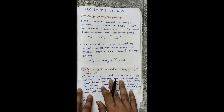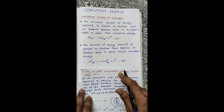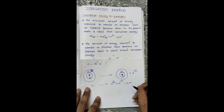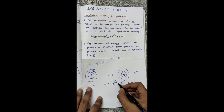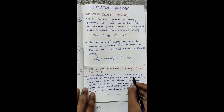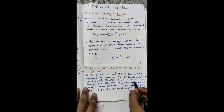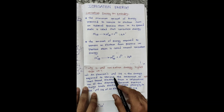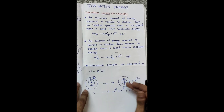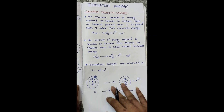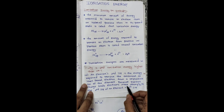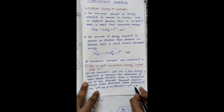Why is the second ionization energy higher than the first? For the first ionization energy there is no charge, but for the second ionization energy there is a positive charge. The positive charge binds electrons more strongly. Because lithium ion has a positive charge, it attracts the outermost valence electrons strongly, so IE2 is comparatively larger than the first ionization energy.